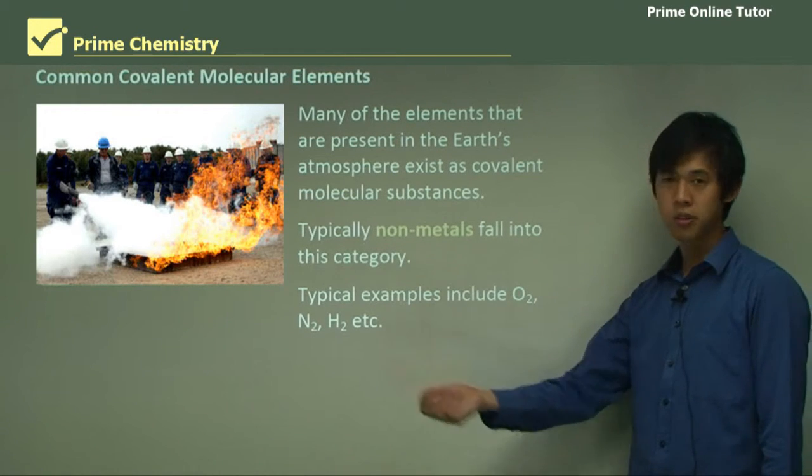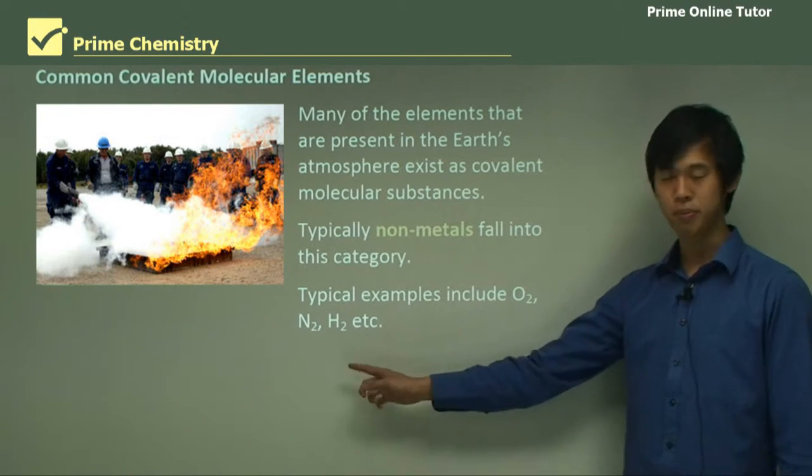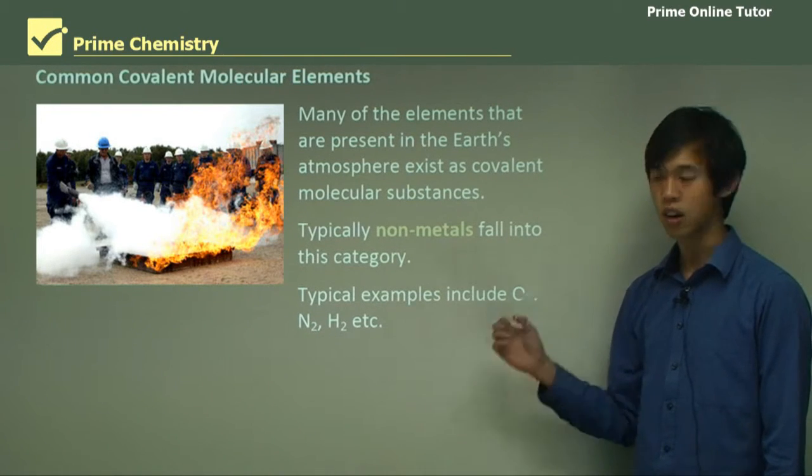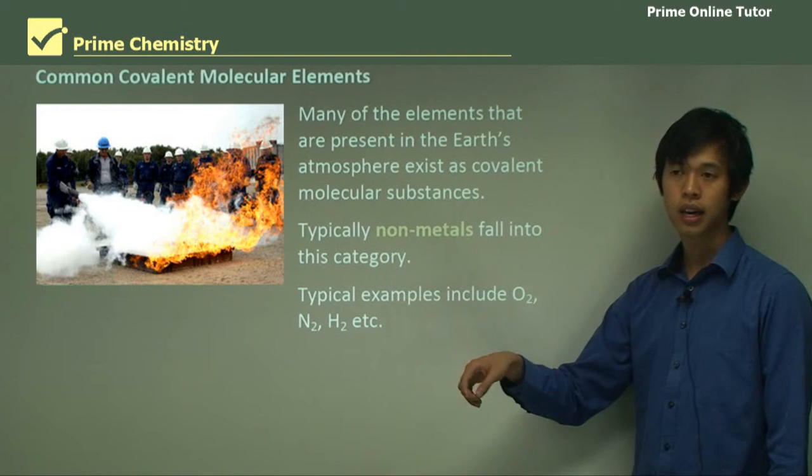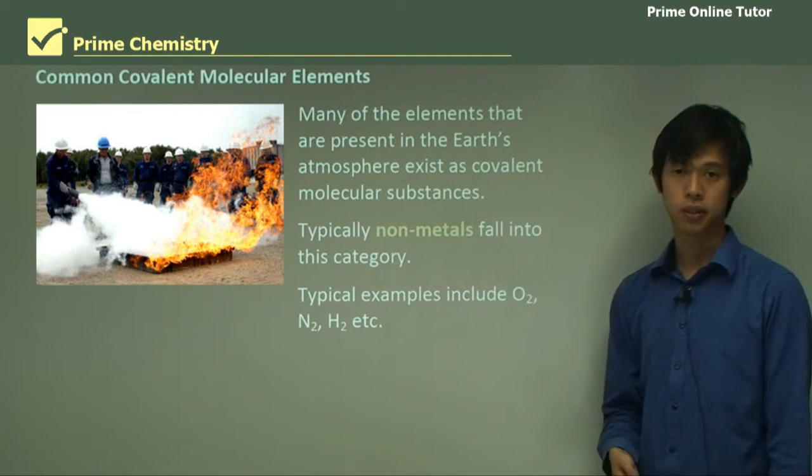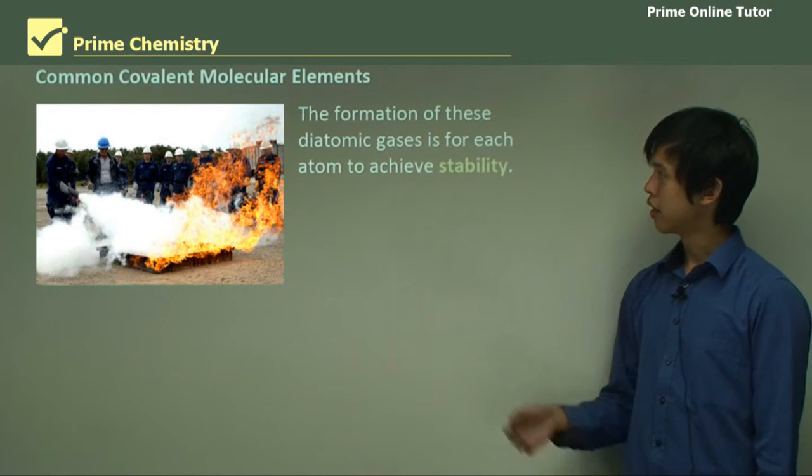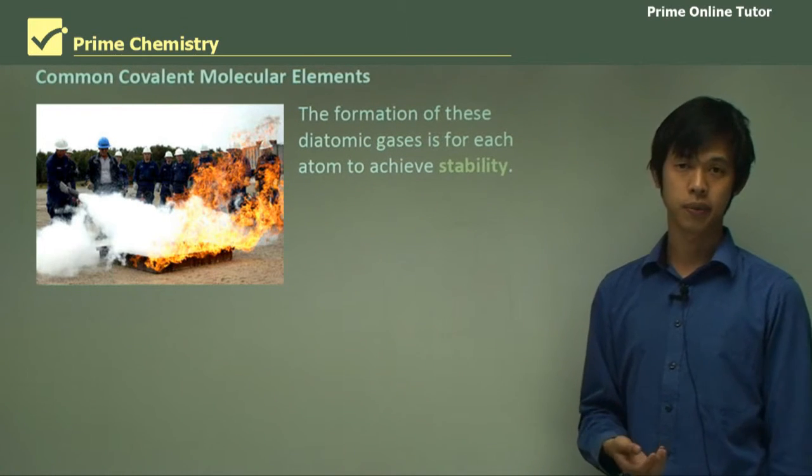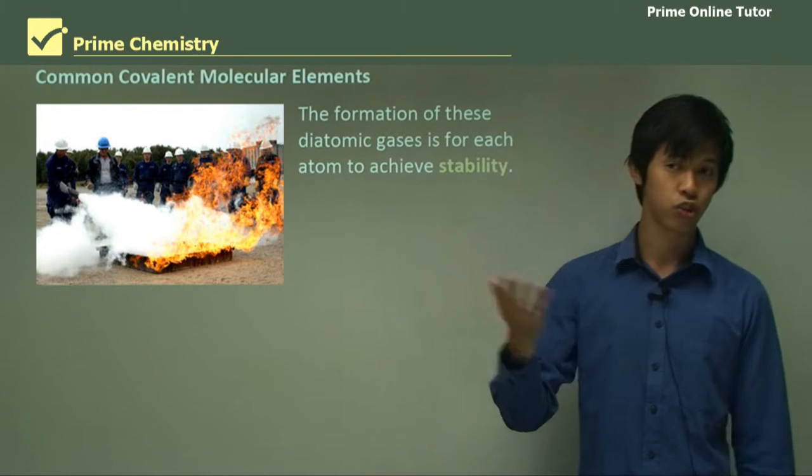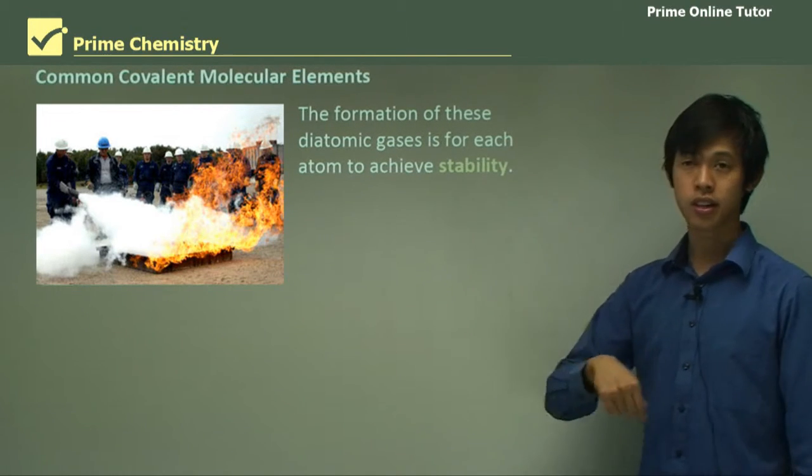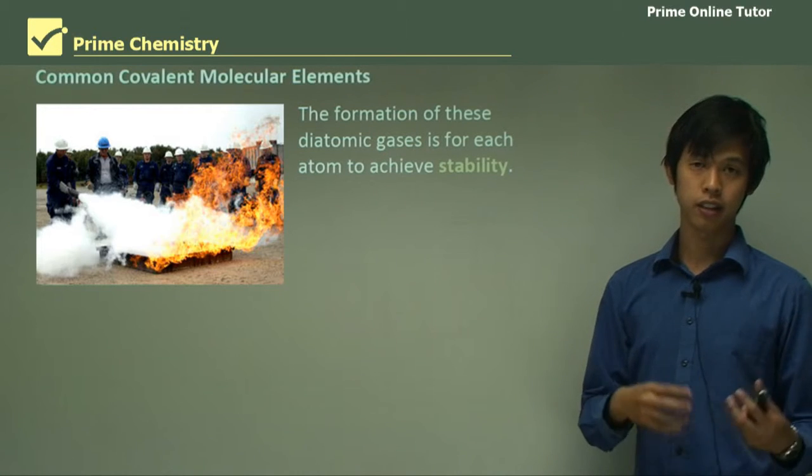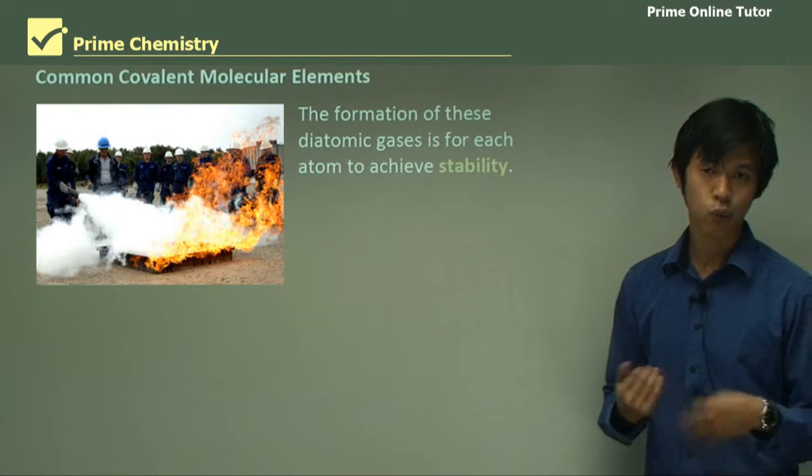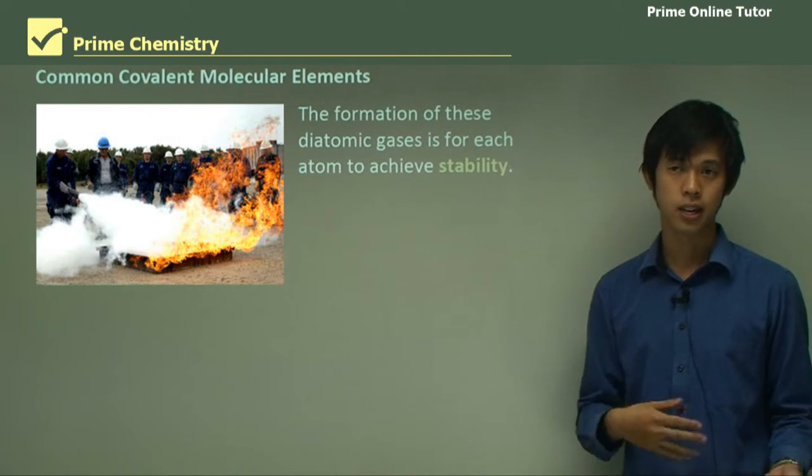So some examples include O2, N2, or H2. These are all elemental forms of these elements, but they exist as molecules. The formation of these diatomic gases is for each atom to achieve stability. So by bonding together in a covalent molecule, we get stability for both atoms.